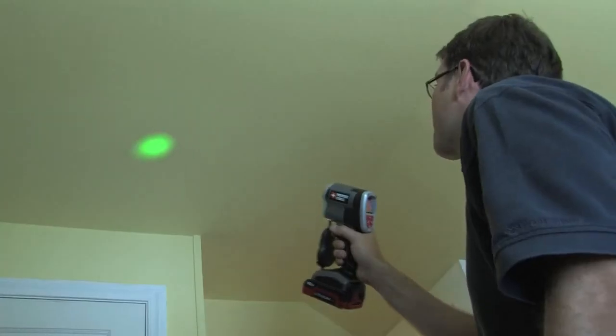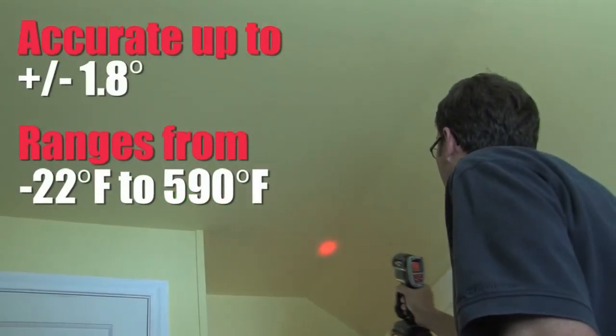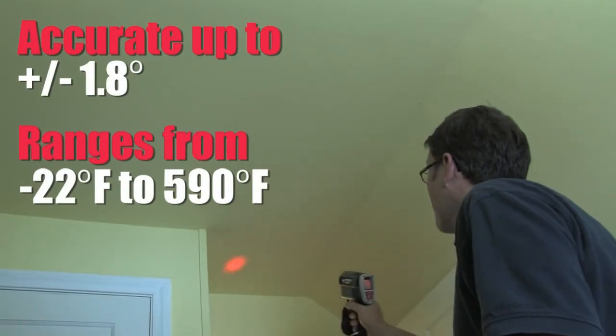The thermometers are accurate to plus or minus 1.8 degrees and have working temperature ranges of negative 22 to 590 degrees Fahrenheit.